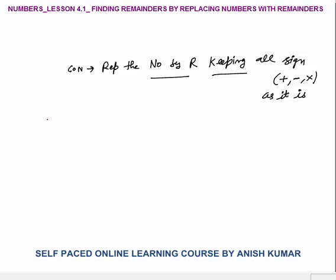For example, 180 divided by 7. If you find the remainder by the normal method: 7 twos are 14, 4 remaining, 40, 7 fives are 35, remainder would be 5. That is a bit difficult because 180 is a larger number — it will take 30 to 40 seconds to find the remainder.